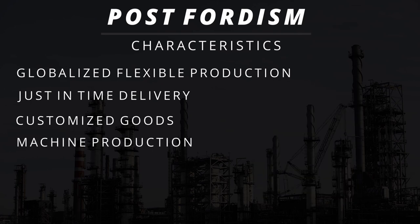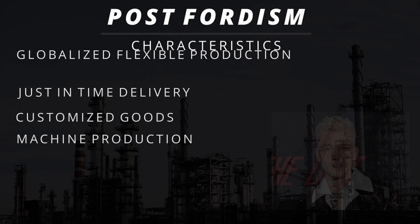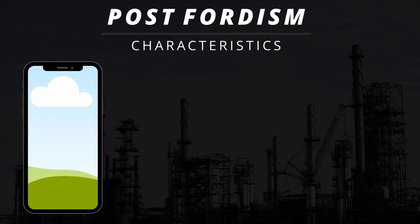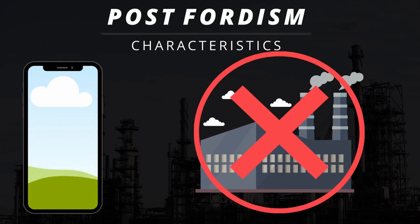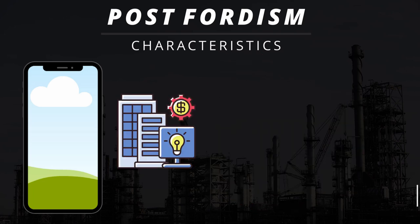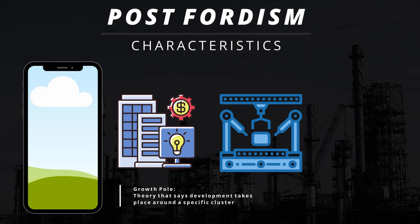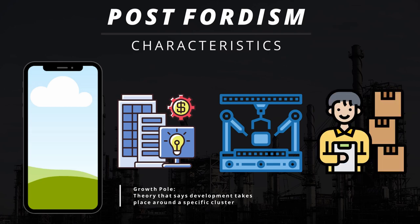Take the iPhone 12 as an example. No longer are these products simply designed and produced in one factory. They are designed in growth poles like Silicon Valley, assembled in China, with resources extracted from various parts of the world, and then sold to consumers. These phones are customizable with their storage sizes and colors, and Apple utilizes just-in-time delivery — meaning that as they see increasing demand, they will produce more to stock up the Apple stores.